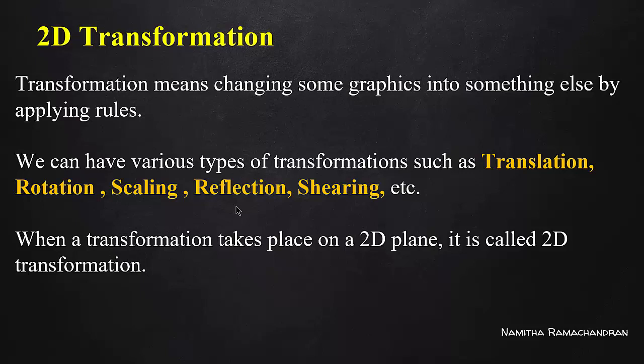If we consider an object in a plane, we apply 2D transformation and observe the changes. Similarly, if we consider a 3D object, it undergoes a similar transformation but in 3D. Right now, we are focusing on 2D transformation — where the object is in a plane — and we will see different changes in this case.